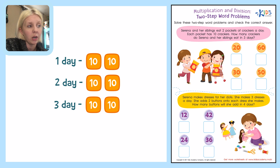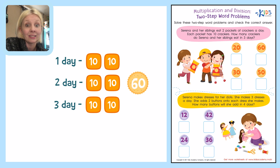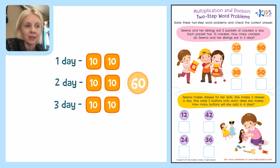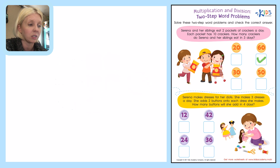Ten, twenty, thirty, forty, fifty, sixty. So in three days all of her siblings ate sixty crackers. Oh my goodness! Let's come over here — do we see it? There it is, there's sixty crackers. So I'm going to put a check right there next to that one. That is the correct answer.